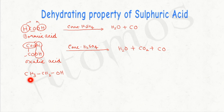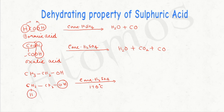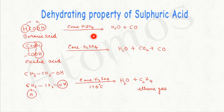One more example: ethanol, which is CH₃CH₂OH. If you treat it with concentrated sulfuric acid and heat the mixture to 170 degrees Celsius, the OH and H are removed from ethanol and together become one molecule of water. What remains is C₂H₄, which is nothing but ethene gas. So when these compounds are treated with concentrated sulfuric acid, a molecule of water is removed because concentrated sulfuric acid has a strong affinity towards water — that is why we call it a dehydrating agent.